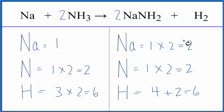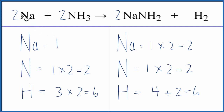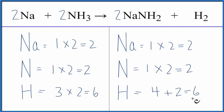Now the sodiums — we have two here and one here. And that's easy because the sodium is all by itself. We put a two here; it doesn't affect anything else. One times the two gives us two. And we're done — everything's the same on each side of the equation.